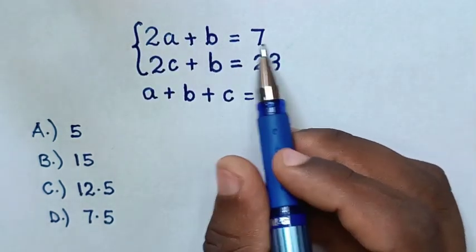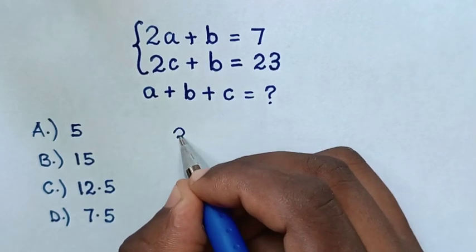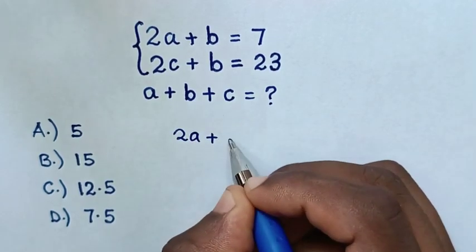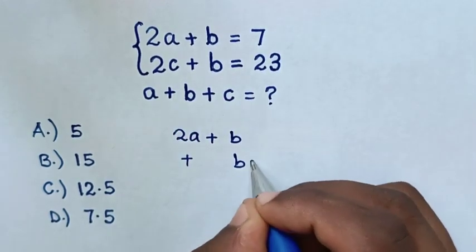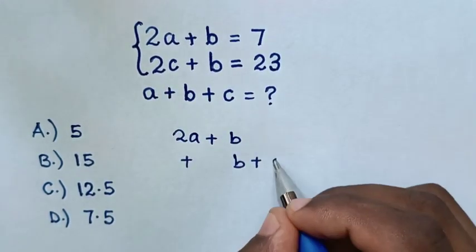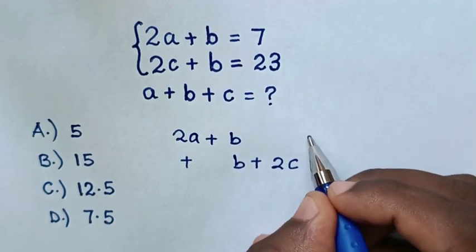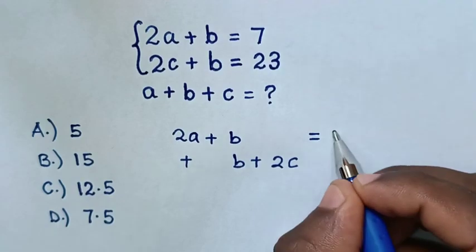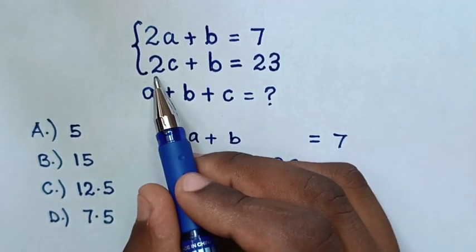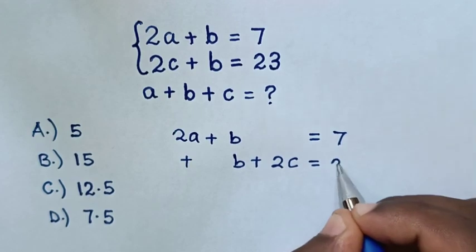Now, from the left side in the first equation, which is 2A plus B, plus the left side in the second equation, B plus 2C, this is equal to, in the first equation 2A plus B equals 7, and the second equation 2C plus B equals 23.